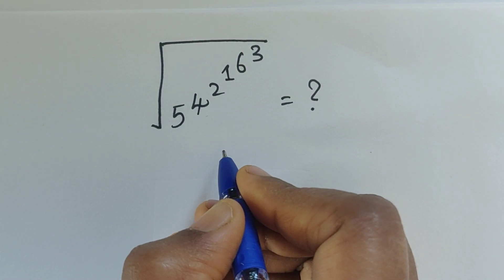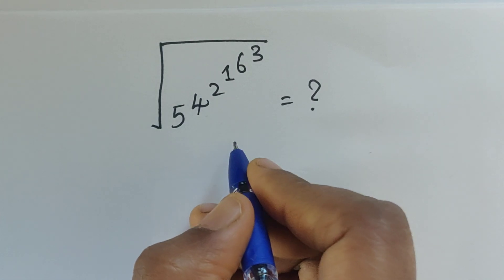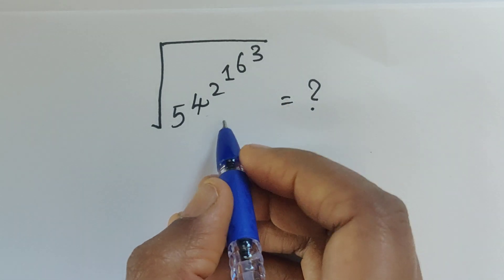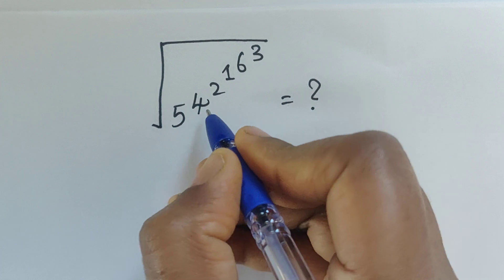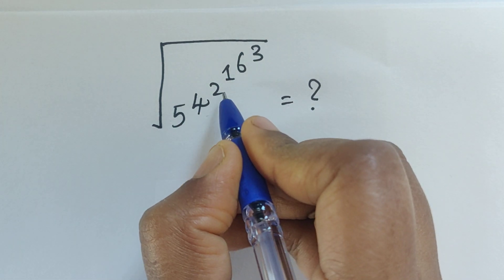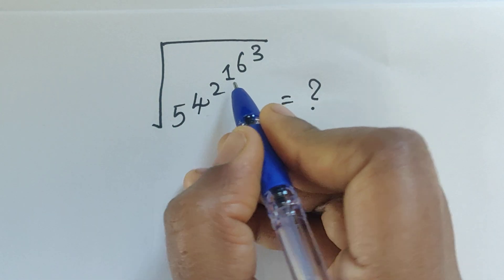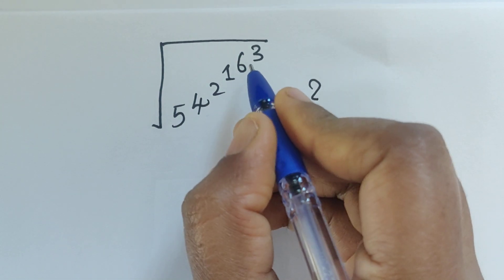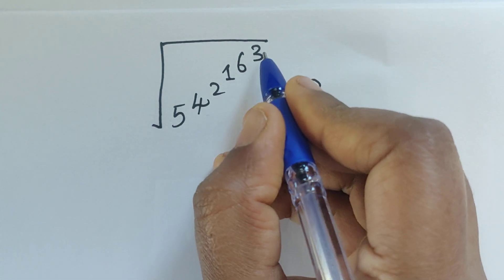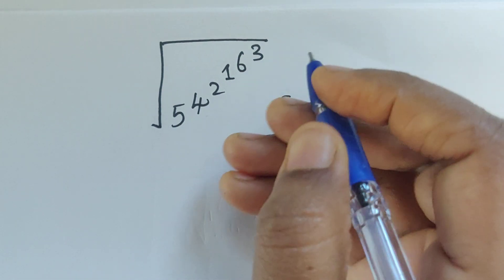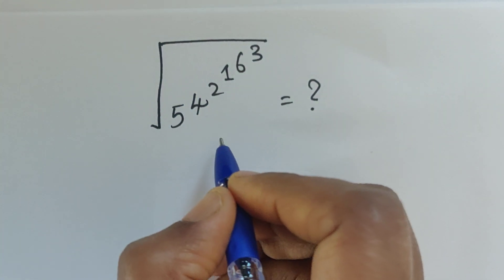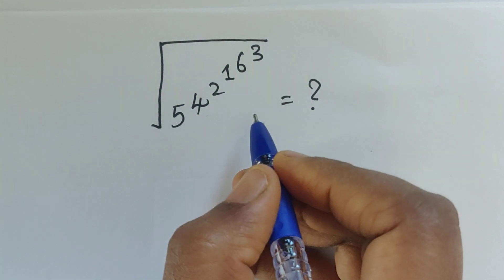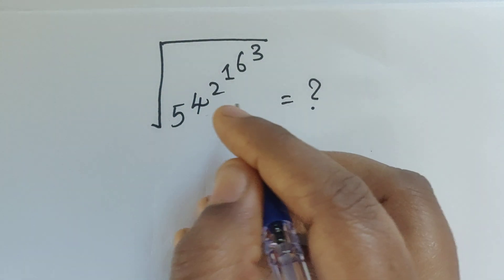Hello everyone, welcome back to our channel. Here we have one problem: the square root of 5 to the power of 4, times 4 to the power of 2, times 2 to the power of 1, times 1 to the power of 6, times 6 to the power of 3. How do we solve this problem without using a calculator?